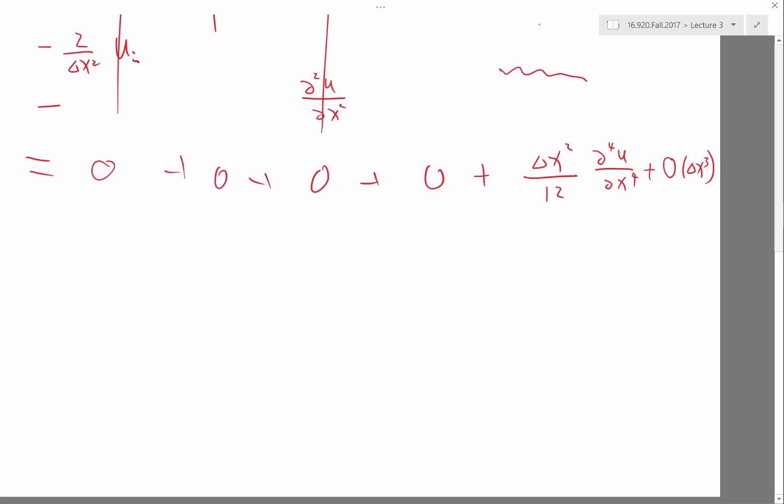The second part is important because you may have a third-order scheme, you may have a little bug in the code. You may go back to first-order. It's very, very common.